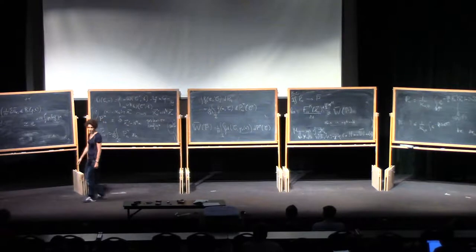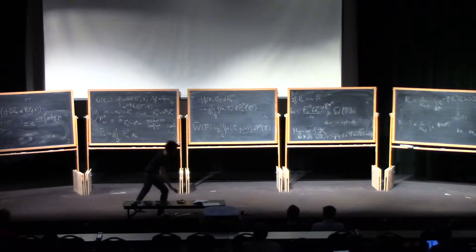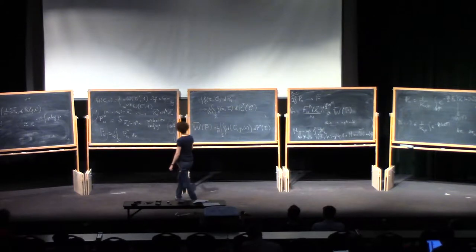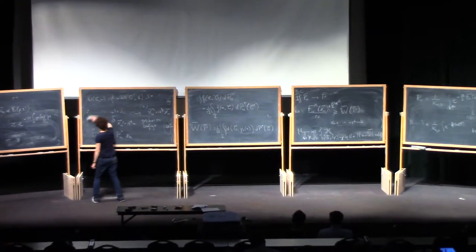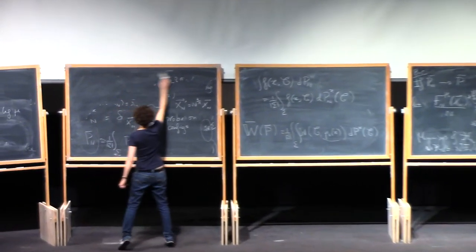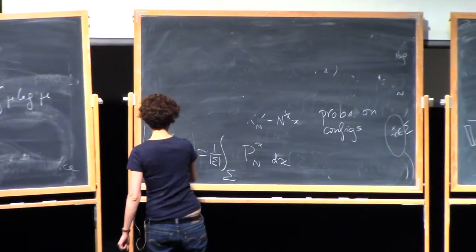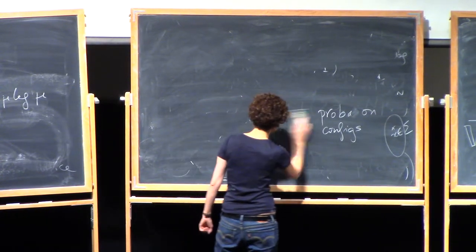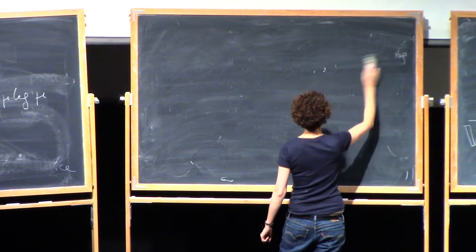There is such a result. See, for example, the books of Rassoul-Agha and Seppäläinen — they present that very nicely. So there is another entropy, which is called the specific relative entropy, and which does the job for you.